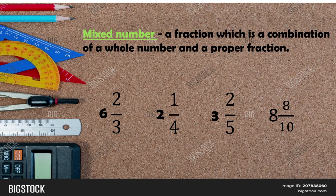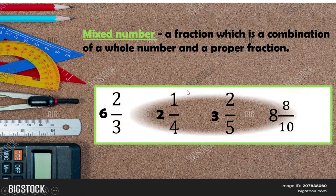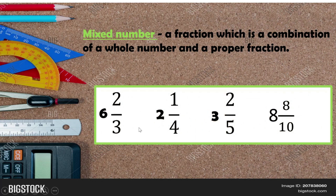Next is mixed number. What is a mixed number? We need to know proper fraction, improper fraction, and mixed number before we go to changing improper fraction to mixed number and vice versa. A mixed number is a combination of a whole number and a proper fraction. Examples are six and two-thirds, two and one-fourth, three and two-fifths, eight and eight over ten. They have a whole number as well as a proper fraction.